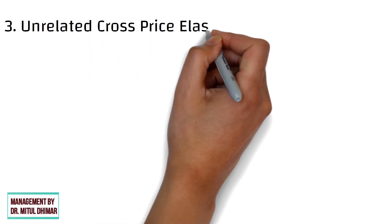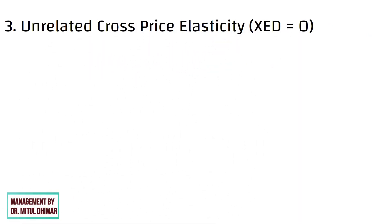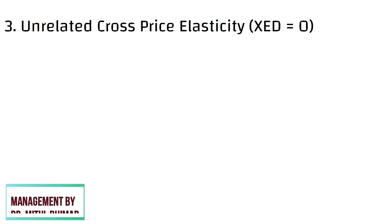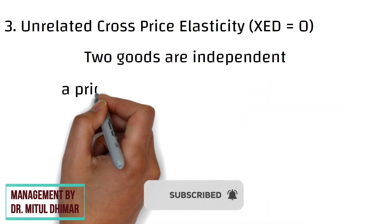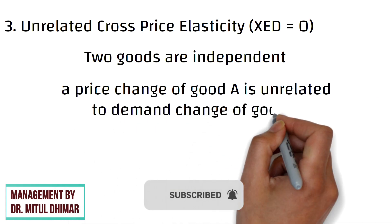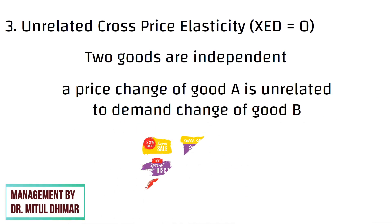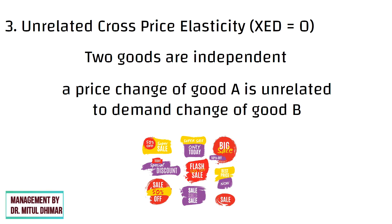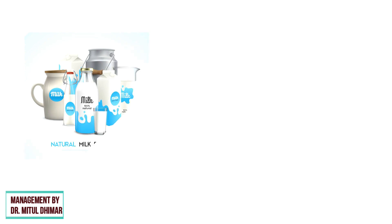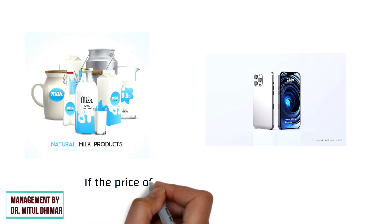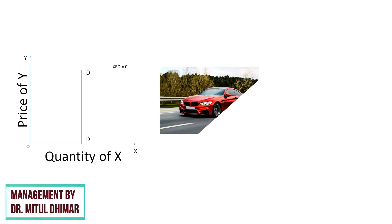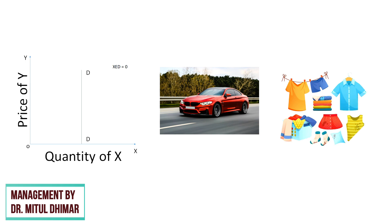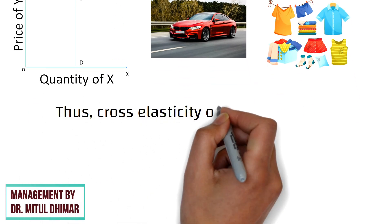Unrelated cross price elasticity is where the unrelated cross elasticity of demand is equal to zero. Zero cross elasticity implies two goods are independent — a price change of good A is unrelated to a demand change of good B, so changes in the price of product A have no effect on the demand for product B. For example, comparing two random products — milk and iPhones — if the price of milk increases by 10%, it would have no impact on the number of iPhones sold. From the graph, we can see that an increase in the price of a car does not affect the demand for cloth. Thus, cross elasticity of demand is zero.